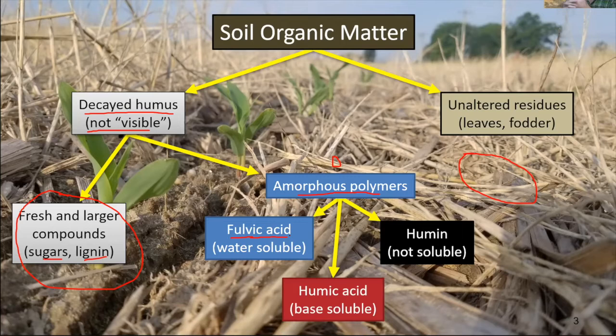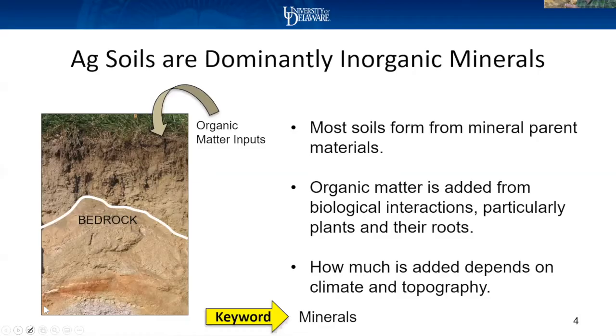Humic acids only move when your soil is a little more alkaline, say a pH above 7, so they're not as mobile. And then humin is stuff like lignin — it's not very soluble and doesn't move in the soil. This is the simplest way we can describe organic matter.